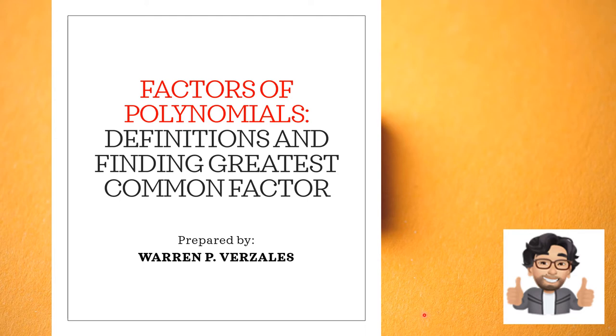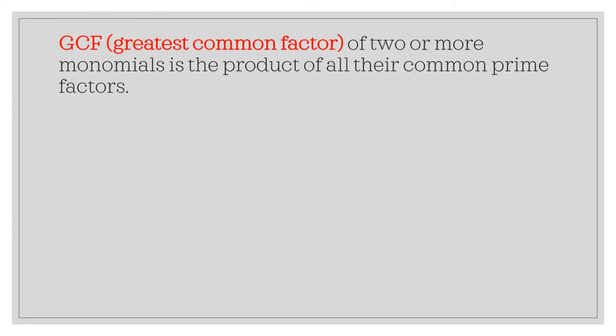Good day! Today's topic is all about finding the greatest common factor in a given expression. Before that, we are going to define first what is the greatest common factor. When we speak of greatest common factor or the GCF, that is a factor of two or more monomials that is the product of all their common prime factors. We are going to get the prime factors of the given expression — it could be two or more monomials.